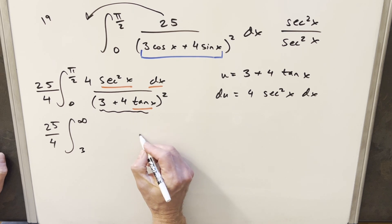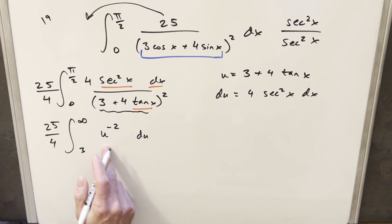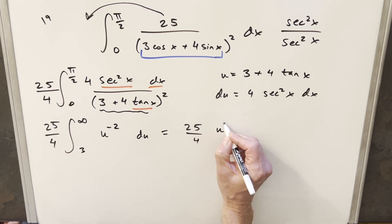So now again, this is all going to be du, everything in the numerator. This is going to be u squared. I'll bring it into the numerator and write it as u to the minus 2, just to use the power rule on this. So then we'll integrate. We have 25 over 4. This is going to become u to the minus 1, and we're going to need to bring a minus out front.